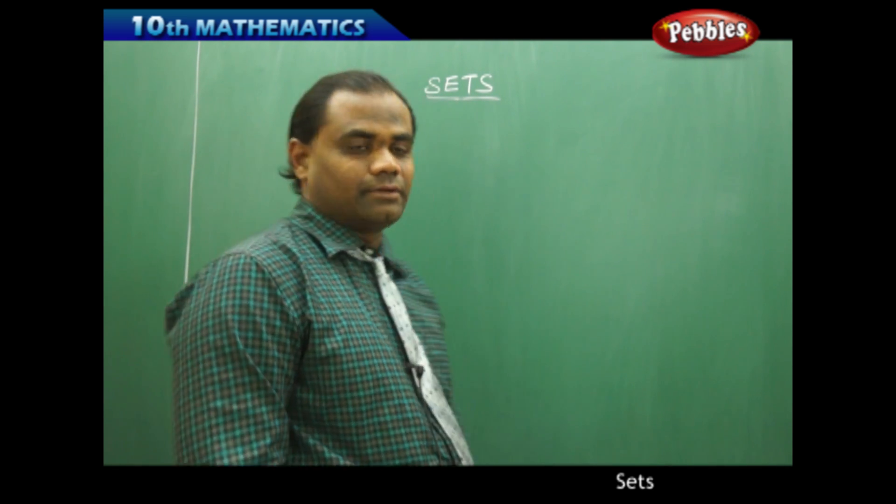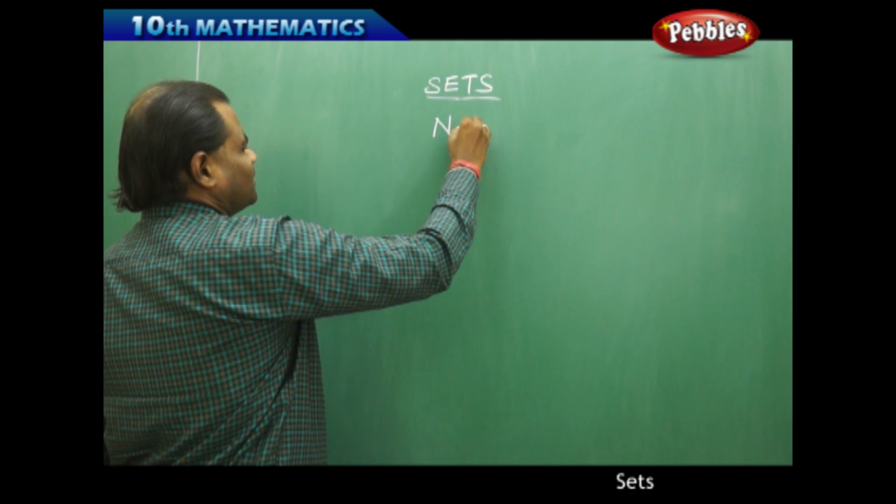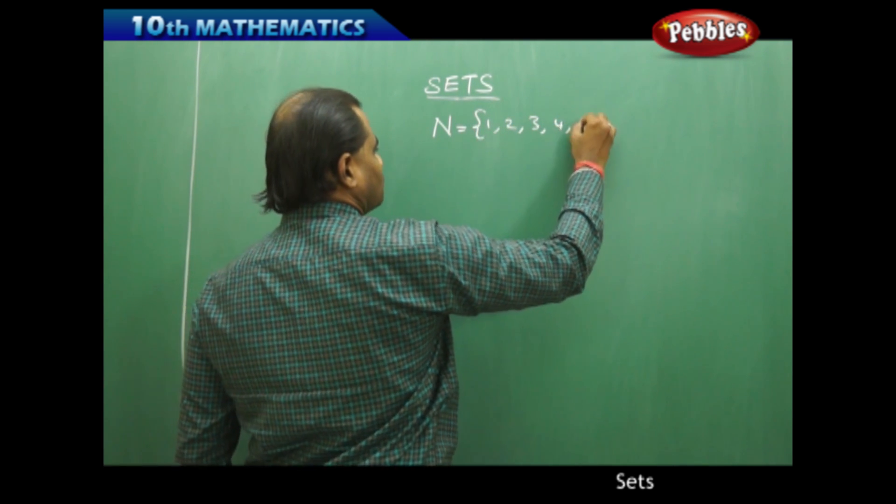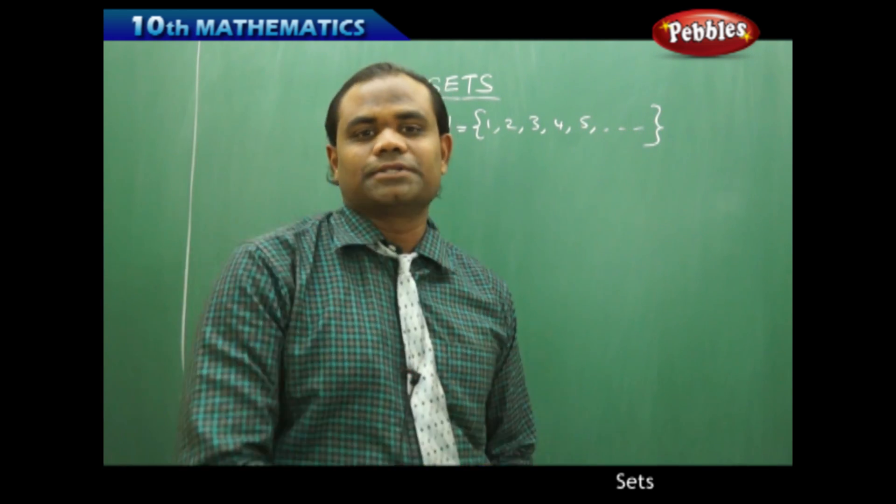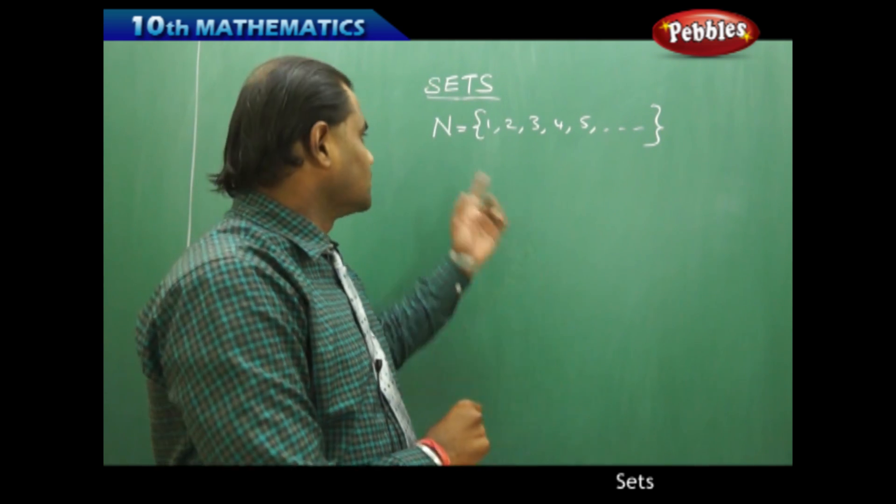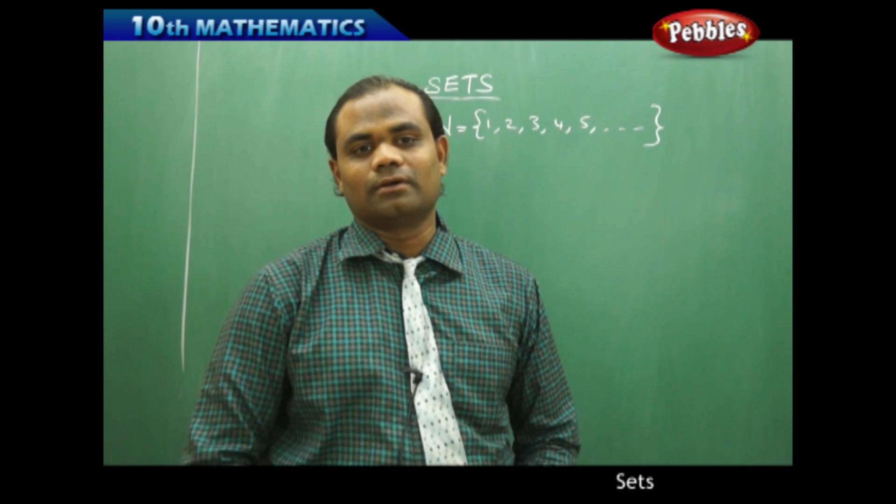When I write, for example in the previous case we have taken the natural numbers as 1, 2, 3, 4, 5 and so on and so forth. I said N is set of natural numbers. So what is the word set when I have considered the case of natural numbers? This is what derives the topic of the session.